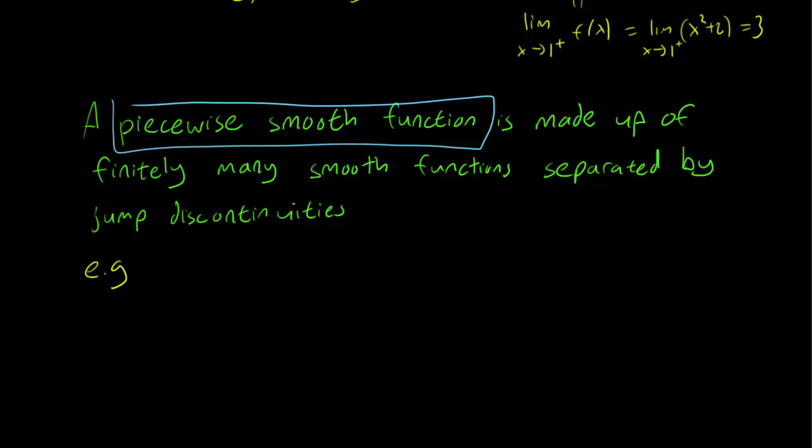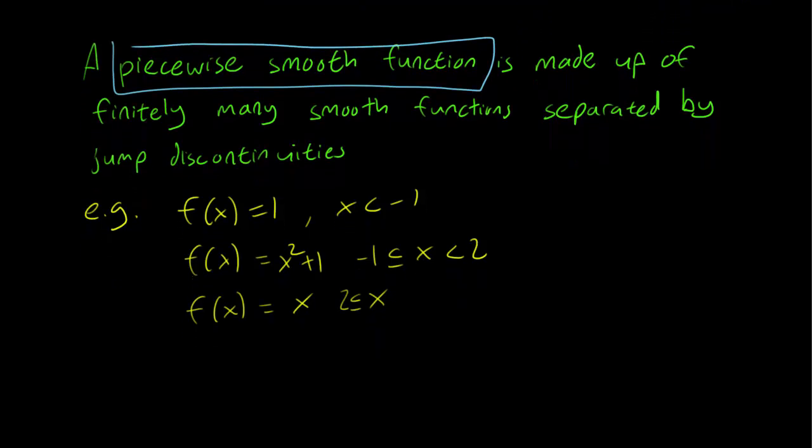Let's look at an example. If fx equals 1 for x less than minus 1, fx equals x squared plus 1 for x lying between minus 1 and 2, and fx equals x for x bigger than 2. We see that all these three terms are smooth functions. They're polynomials, and therefore they're smooth. If we differentiate them, you get a smooth function too. And they are broken up in certain ways, but we can see that these are jump discontinuities.